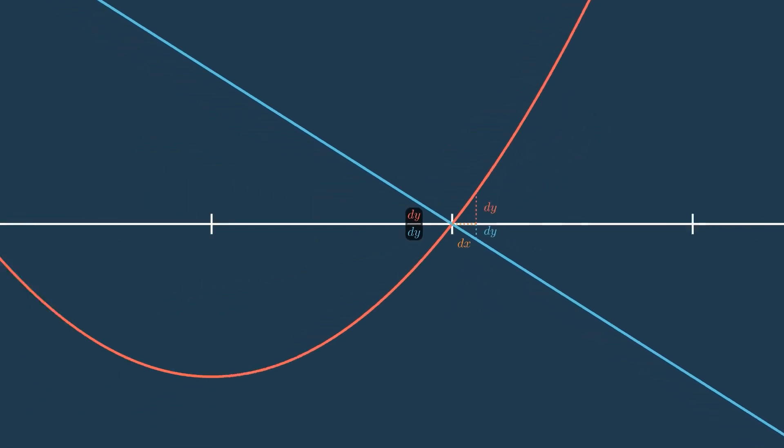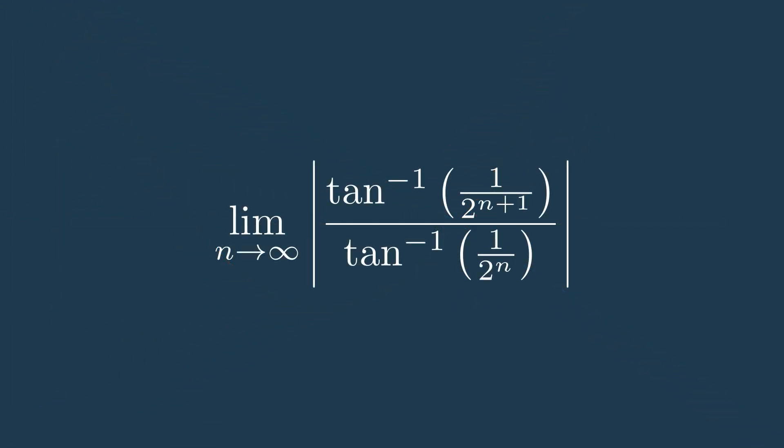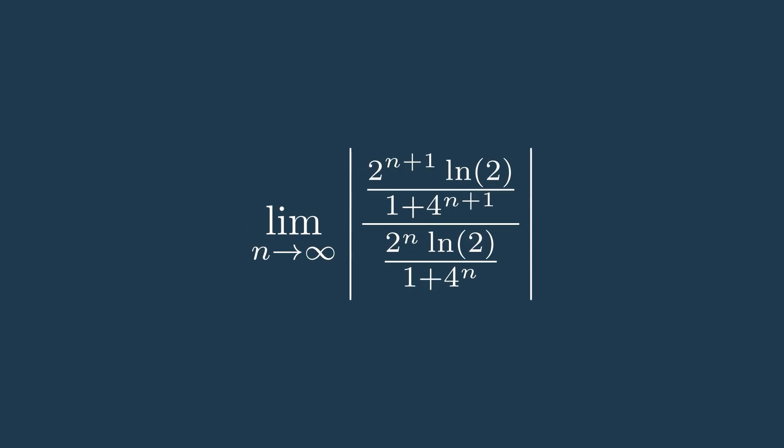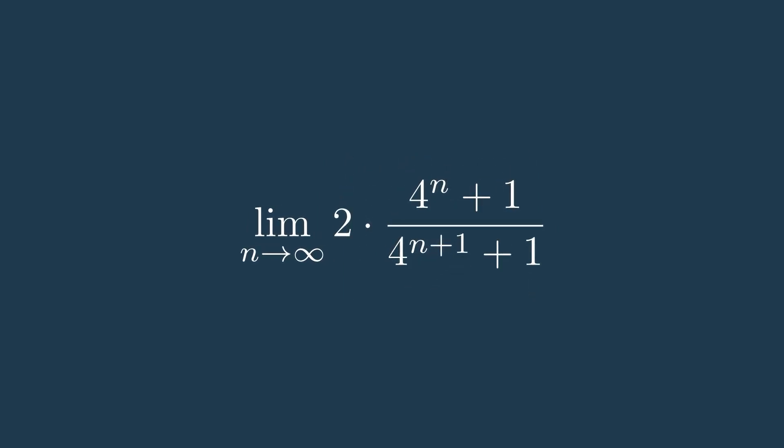I'll use that approach here, and take the derivative of top and bottom separately, then simplify. In evaluating the limit, we get that the ratio of the next term to the previous term as we approach infinity is 1 half. This means that the terms are shrinking as we approach infinity, and therefore the series must converge.